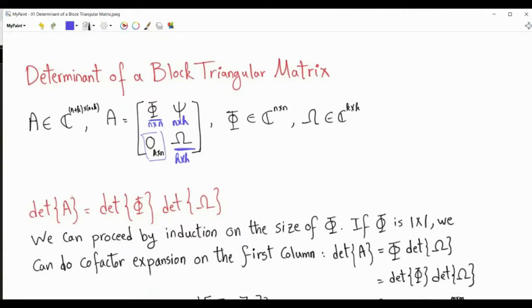The result we are interested in is that the determinant of A equals the determinant of φ times the determinant of ω, and the proof is by induction.